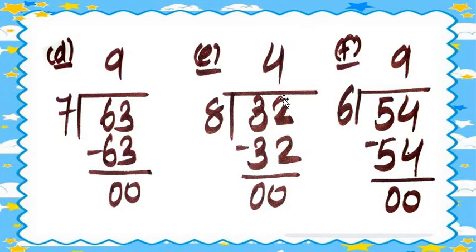Question 2f: 54 divided by 6. In the table of 6: six ones are 6, six twos are 12, six threes are 18, six fours are 24, six fives are 30, six sixes are 36, six sevens are 42, six eights are 48, six nines are 54. So 54 minus 54 equals zero. The quotient is 9.